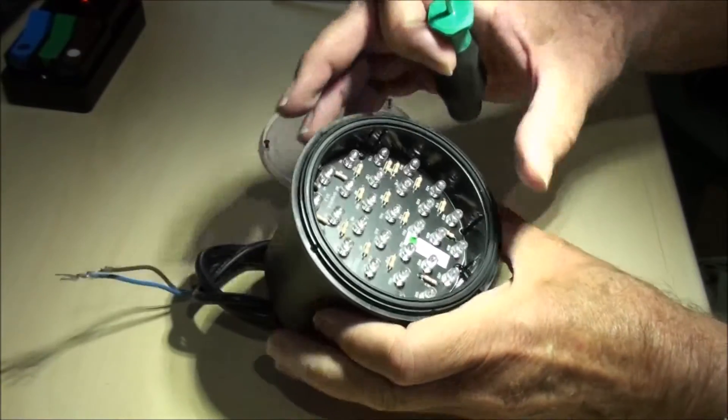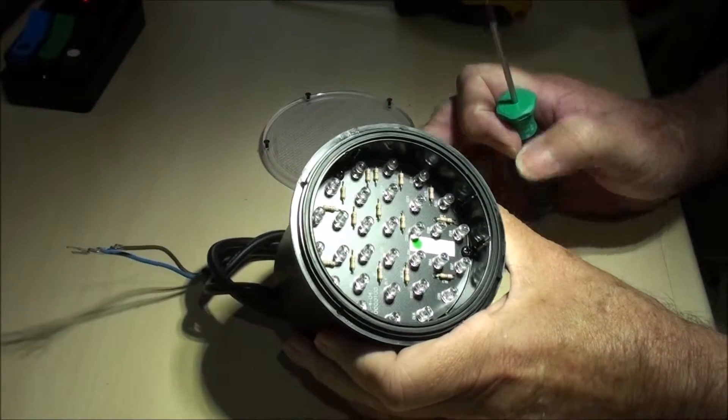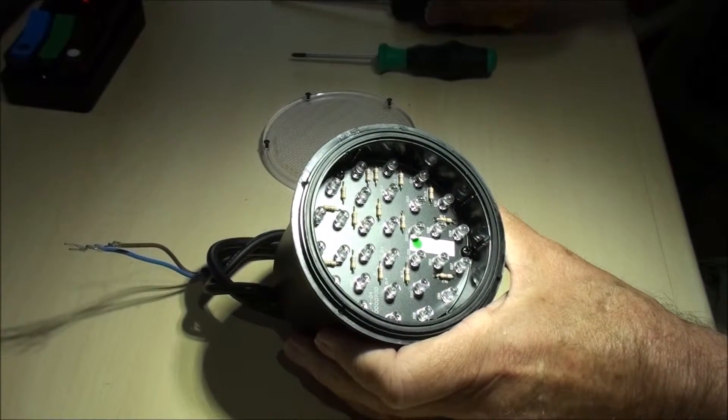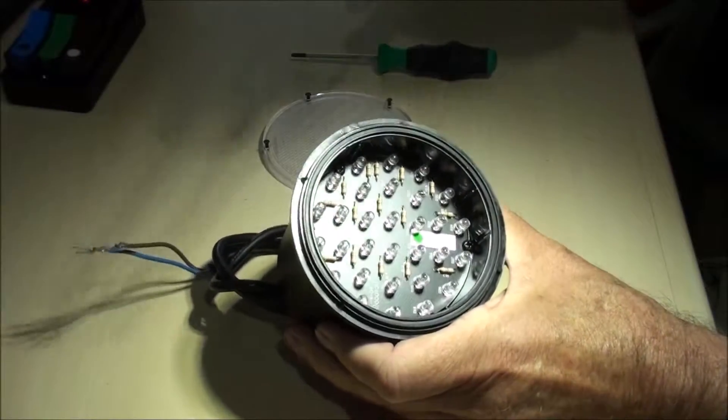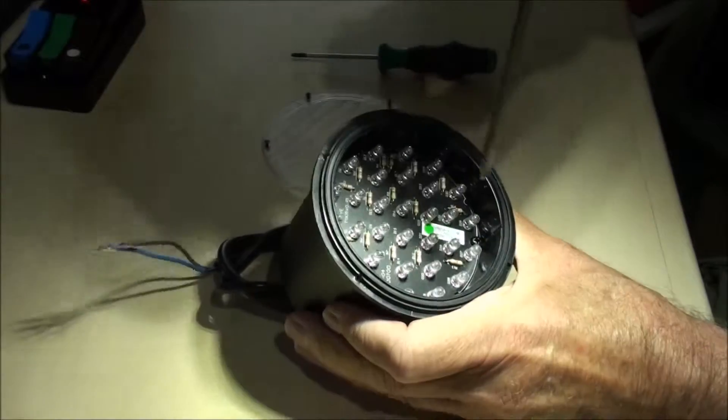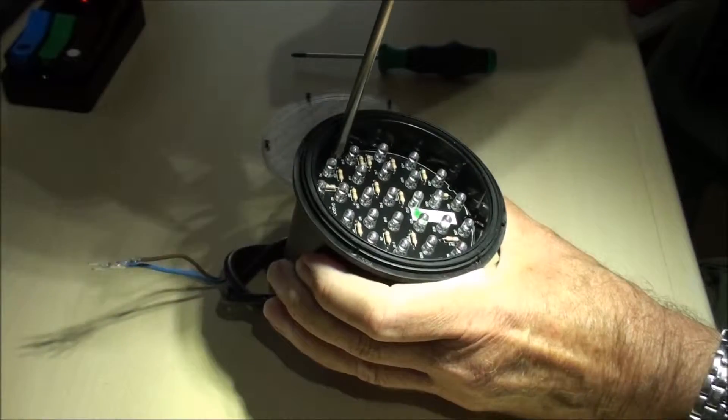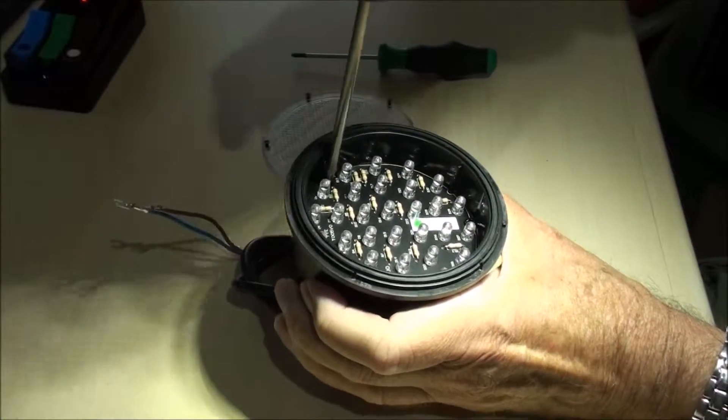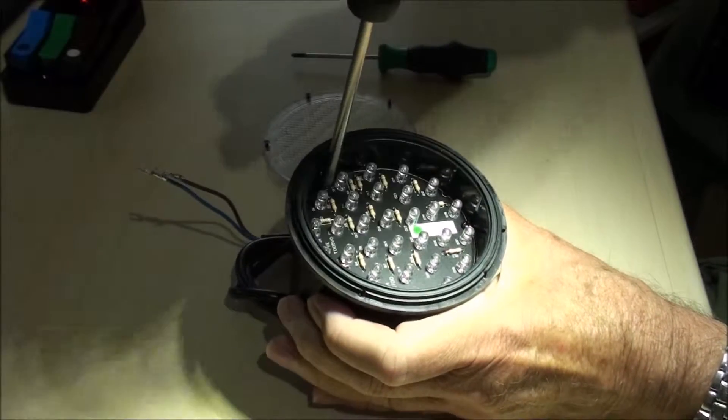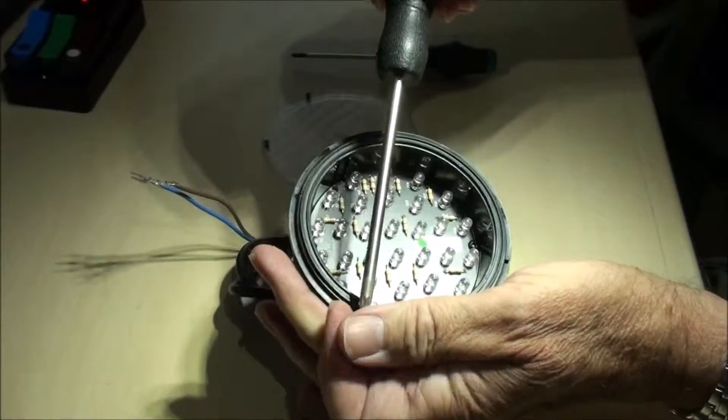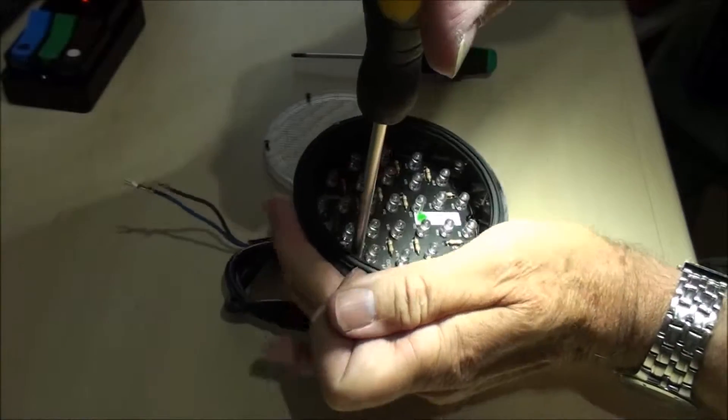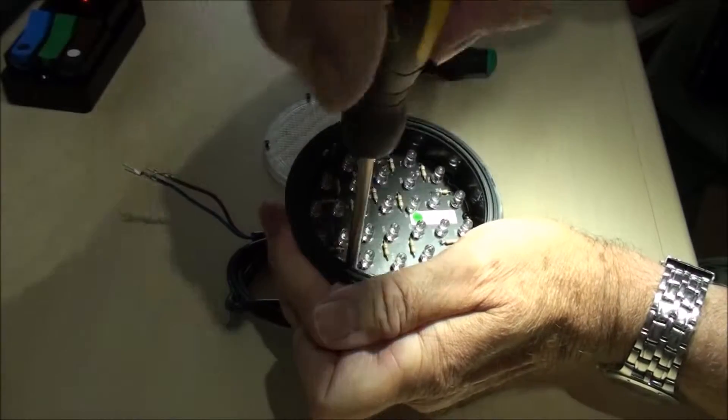Inside the unit there is the cluster board. To remove the cluster board we need to take out one, two, three screws, which we shall do so now. It is much better to use a magnetic screwdriver for this job, otherwise we tend to lose the screws very easily.